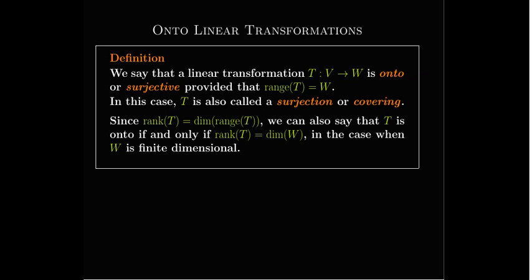What about onto? Again, essentially the same definition. We say that a linear transformation is onto provided that its range is all of the codomain — every vector in the codomain is the image of some vector under T. That's why we also call it a surjection or a covering. We can also think about this in terms of dimension and rank: the rank of T is the dimension of the range of T, and if the rank of T equals the dimension of W, then T is onto.